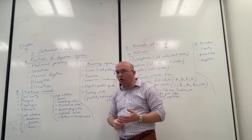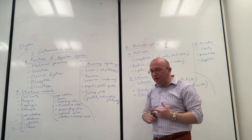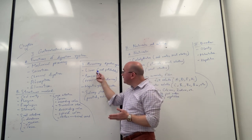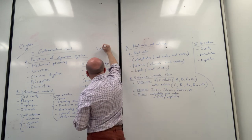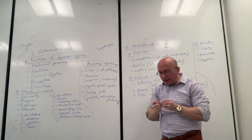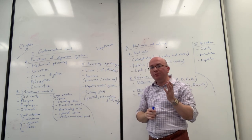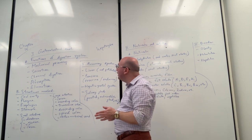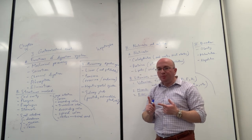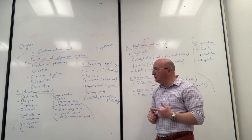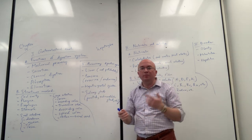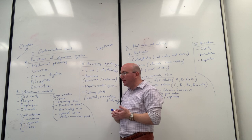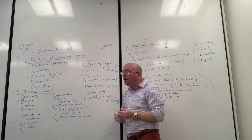The liver is a very large organ with many functions. It contains hepatocytes — cells that have enzymes which take nutrients coming from the digestive tract, break them down, and send them on to the rest of the body. Hepatocytes process essentially all nutrients coming from the digestive tract through the hepatic portal system — the venous system of veins draining blood from the small intestine, stomach, and the rest of the digestive tract — taking them to the liver to be processed by the hepatocytes and enzymes there.